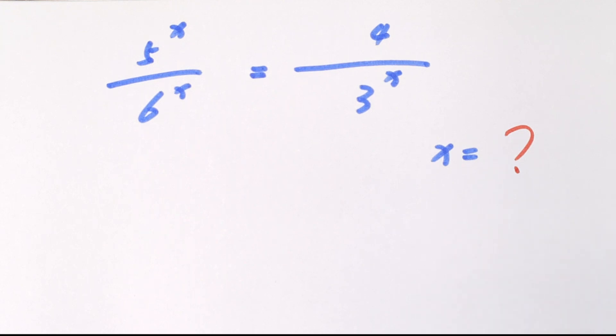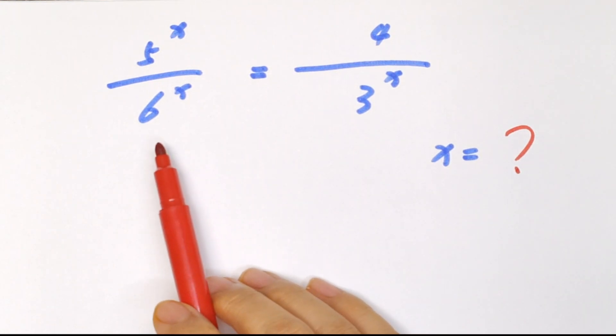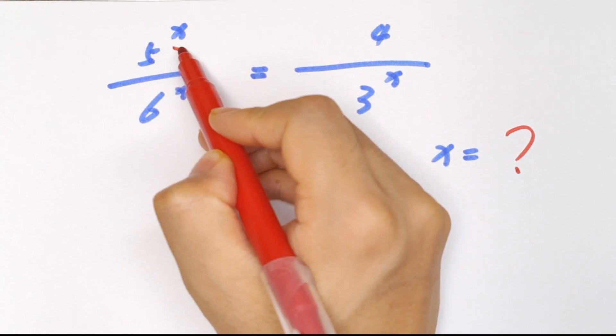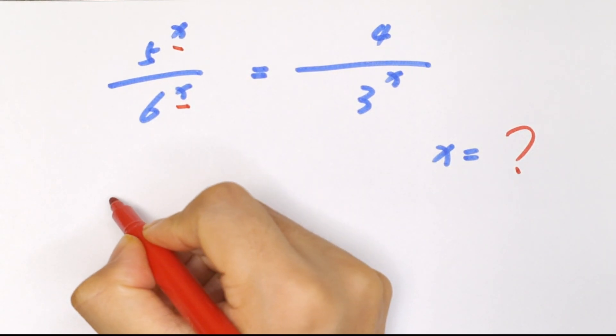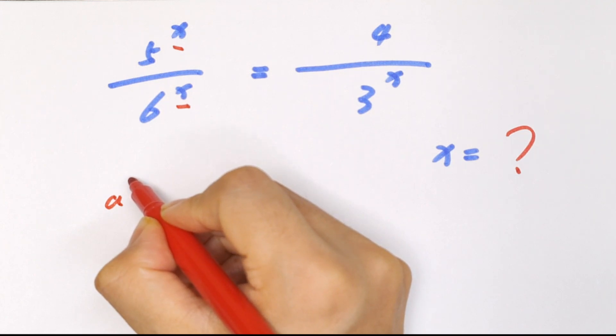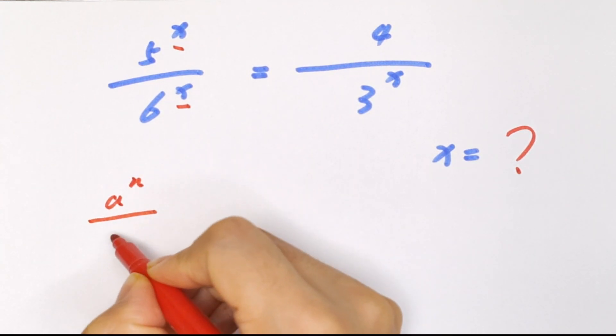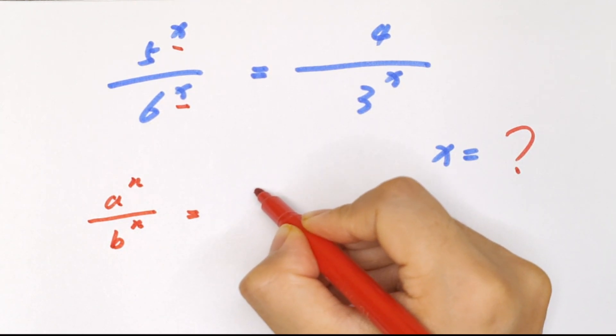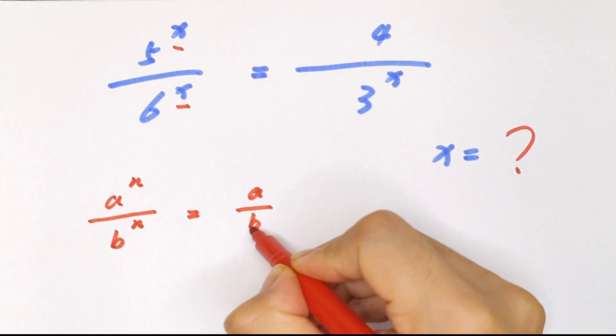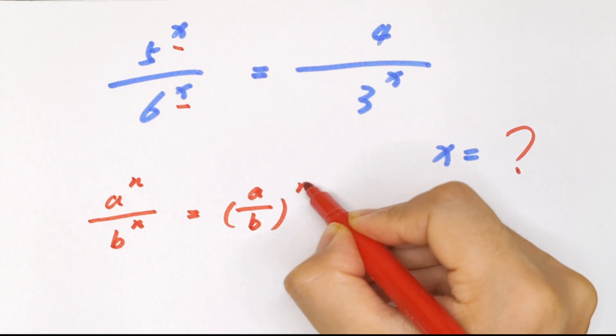To find the value of x, first, the left side, we have same powers. So we apply the formula that a to the power of n over b to the power of n equals a over b bracket to the power of n.